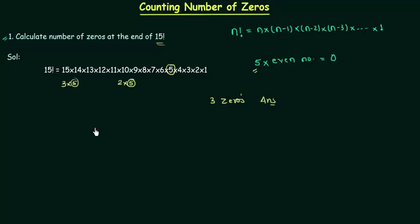But what if the number is large like 100 factorial? We are not going to expand 100 factorial and search for 5 in the expansion. It is not possible to count 5 in that expansion.